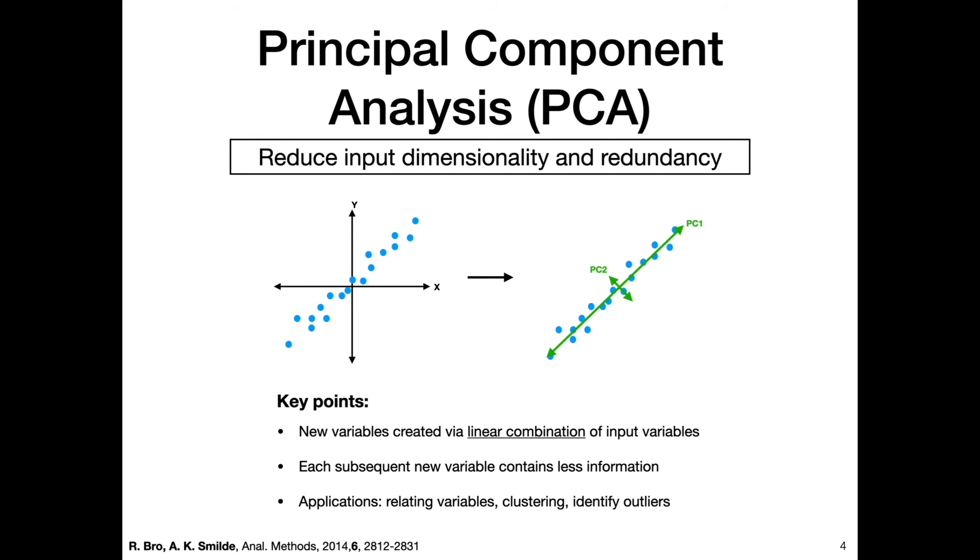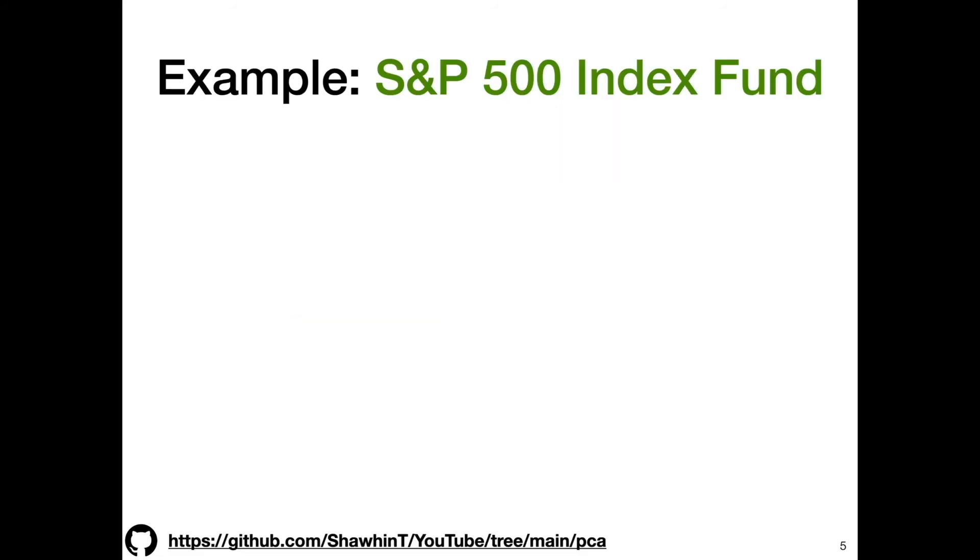You can also do some outlier identification—plot all your points in your principal component space and visually inspect if there are any outliers. Here's a fun example. At the outset, I'm gonna say I'm not a financial advisor, I've never taken a finance class, so in no way is this a recommendation of how you should invest your money. This is just a fun example of what PCA can do.